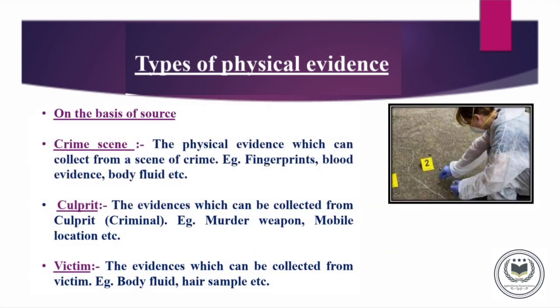Here we discuss Physical Evidences on the basis of Source. There can be three types of Physical Evidences on the basis of Source: Physical Evidences from Crime Scene, Physical Evidences from Culprit, and Physical Evidences from Victim. The Physical Evidences collected from the Crime Scene can be Footprints, Nails, Blood, Semen, etc.